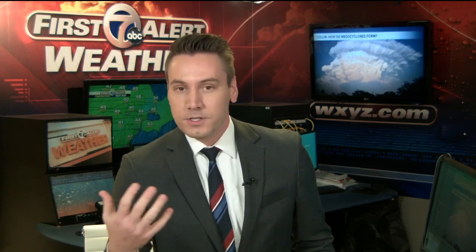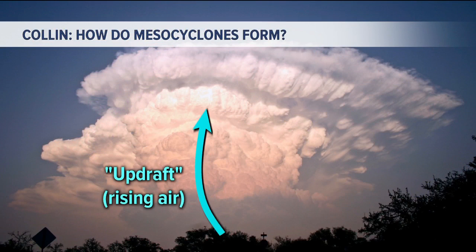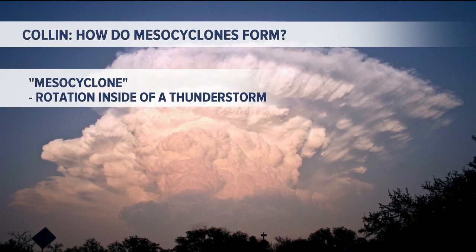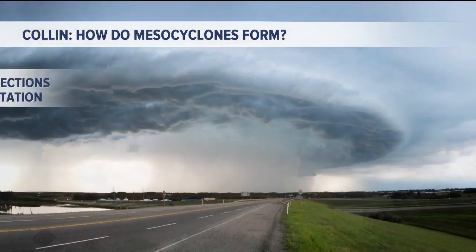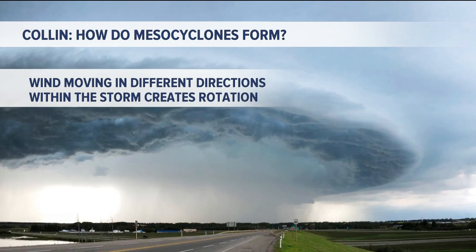It's a type of thunderstorm, and you've likely seen the pictures on the internet — you may just not have realized it. A mesocyclone starts with a thunderstorm, so you get a strong updraft — that's rising air — and that's what helps create a thunderstorm. A mesocyclone is when you have rotation inside of a thunderstorm, and oftentimes you see what kind of looks like a little UFO shape — those are mesocyclones, if you've seen those pictures of thunderstorms around social media.